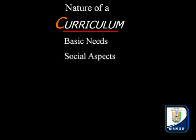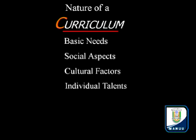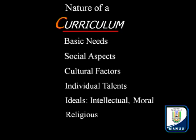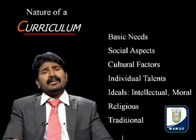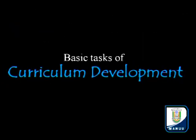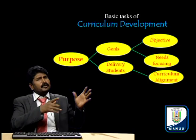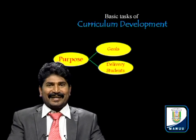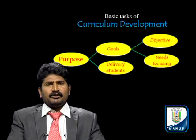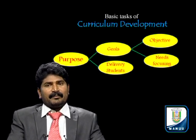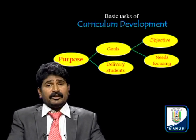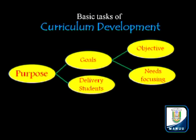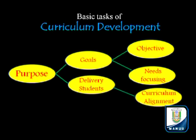The basic needs of curriculum include social aspects, cultural factors, individual talents, ideals, intellectual and moral factors, and religious and traditional factors. These make very clear the exact nature of curriculum. A diagram illustrates that purpose leads to goals and delivery; under goals, two important things are objectives and needs-focusing, which are very important in curriculum development. Curriculum alignment is also very important in the delivery to students.